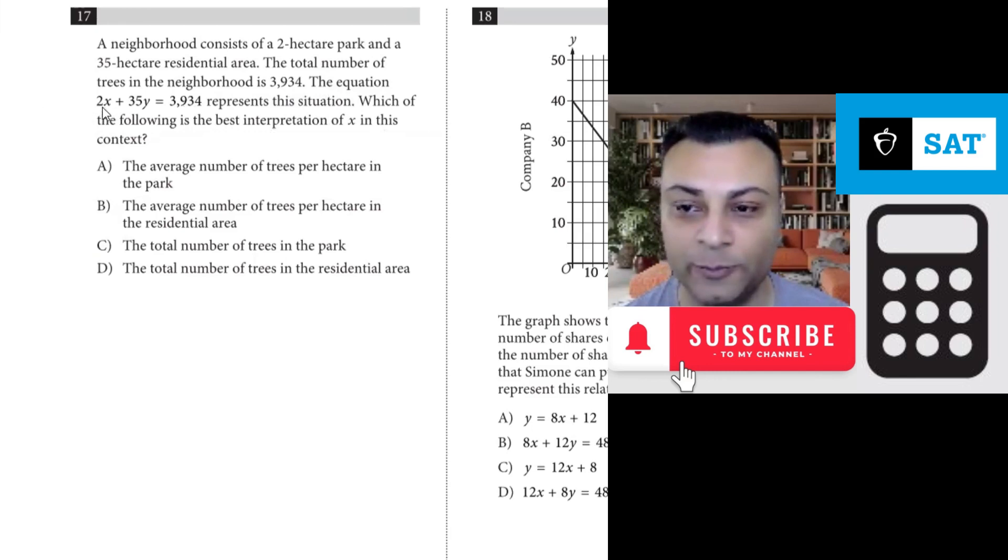This x over here. Now the choices are: the average number of trees per hectare in the park, the average number of trees per hectare in the residential area, so the only difference is park versus residential area, the total number of trees in the park, and total number of trees in the residential area.